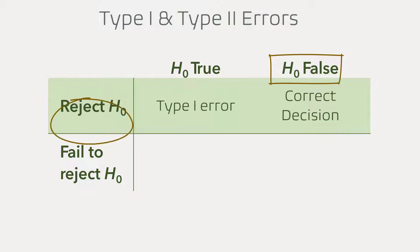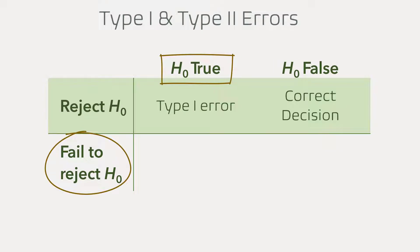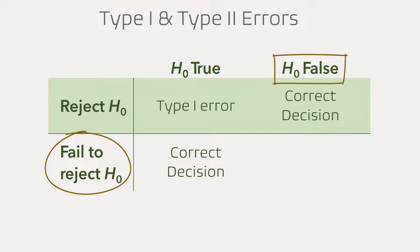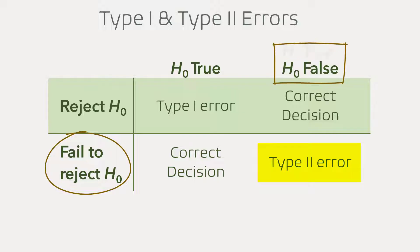Similarly, failing to reject a true null hypothesis is a correct decision, and failing to reject a false null hypothesis is called a type 2 error. In other words, if the alternative hypothesis is true and we do not reject the null hypothesis, we have committed a type 2 error.